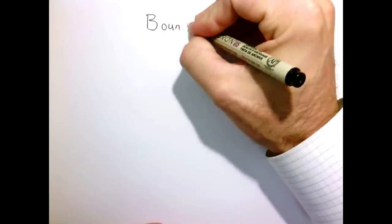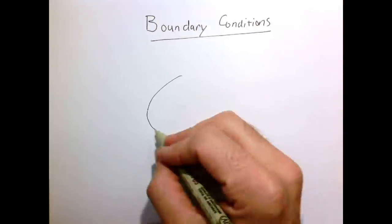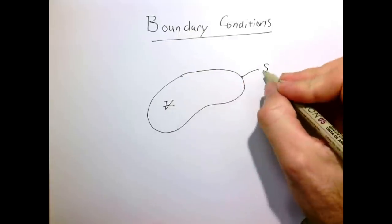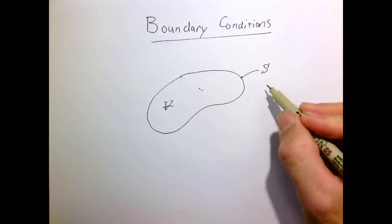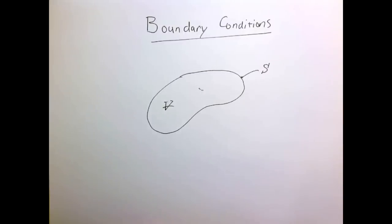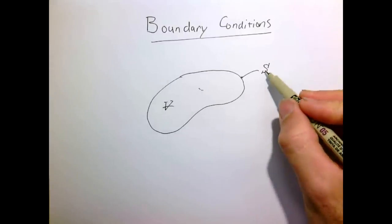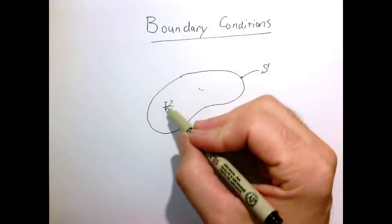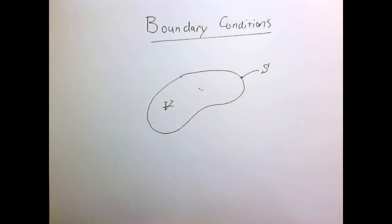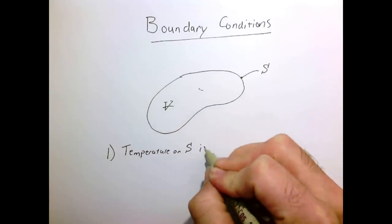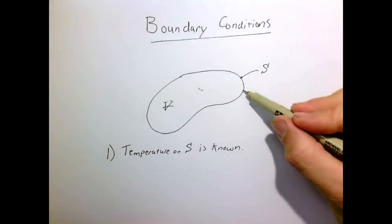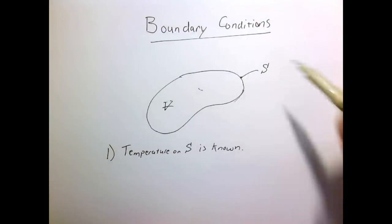So let's discuss boundary conditions. Here's our region. We have to tell the heat equation, which is solving for the temperature distribution inside this region, how it communicates to the world and universe around it. So we need to specify what's happening on our boundary S so that the material inside our region, our volume V, knows how to respond. There are three common boundary conditions that we'll use. Number one is that the temperature on S is known — we simply go around the surface and have some function, or more likely a constant, specifying the temperature all the way around.